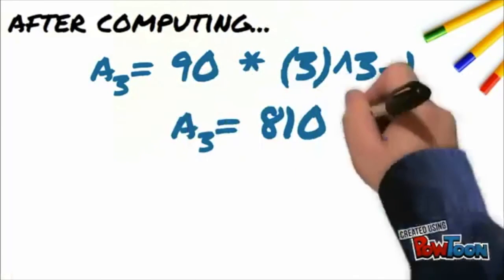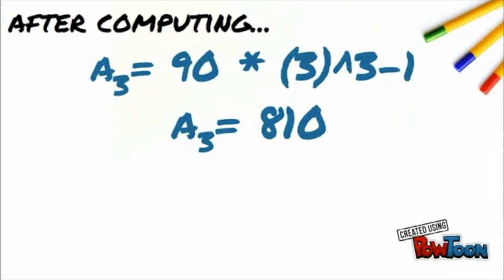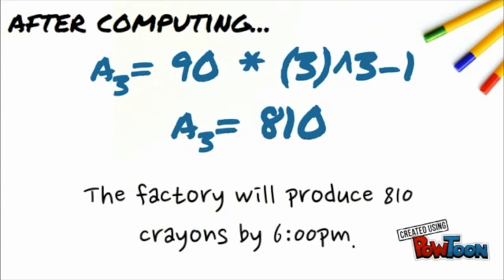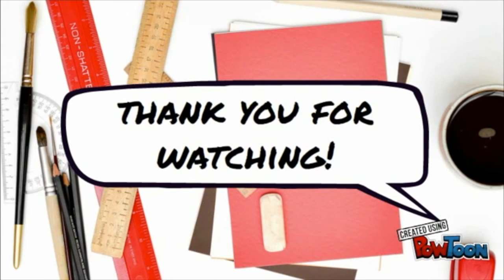Then, plug these terms into the formula. First, we have to simplify 3 raised to 2. 3 raised to 2 is 9 and when multiplied to 90, it will become 810. So, there are 810 crayons collected at the third hour or 6pm. And that is how you work with geometric sequences.